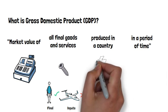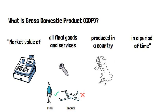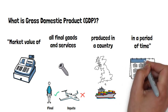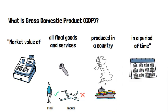Produced within a country means everything was made in the country, including exports. And in a given period of time usually means a year or a quarter.